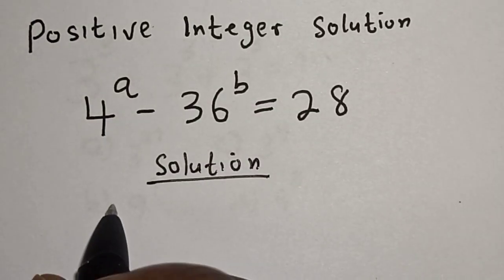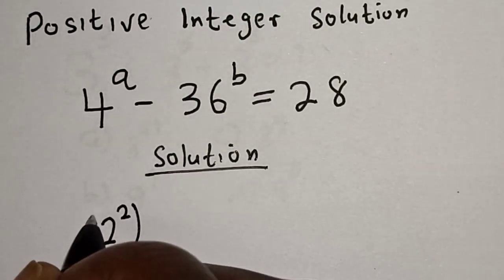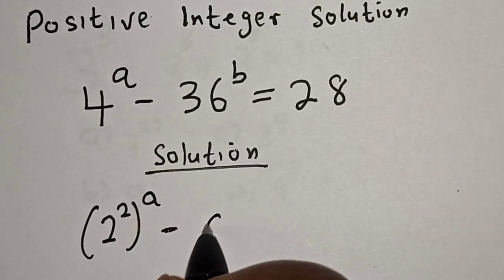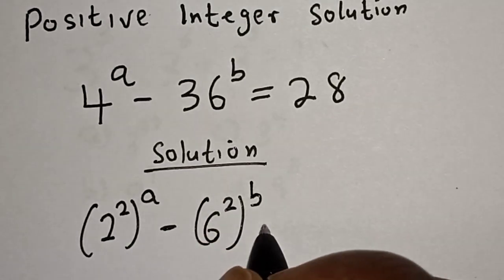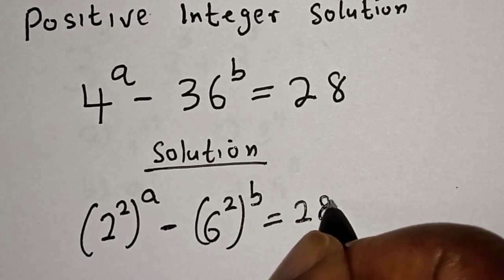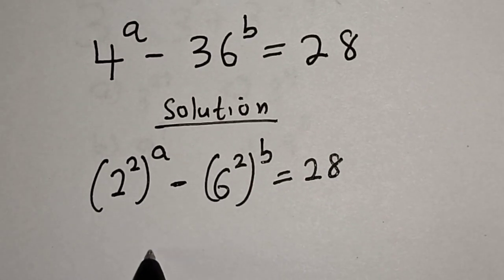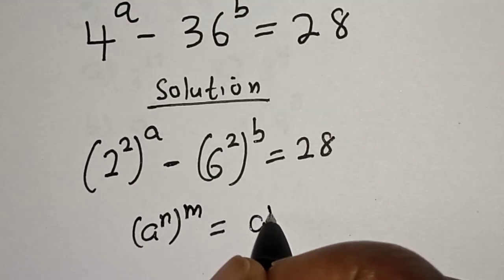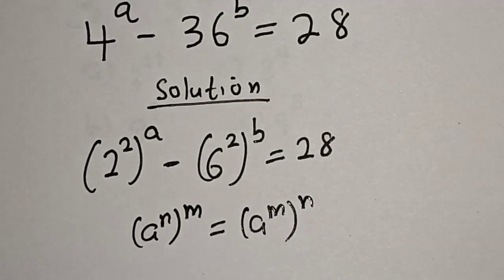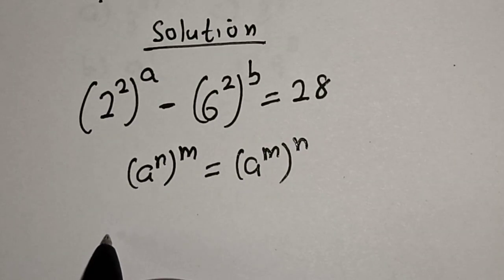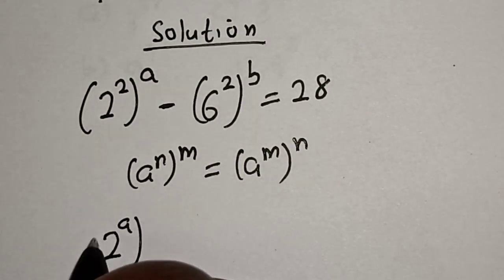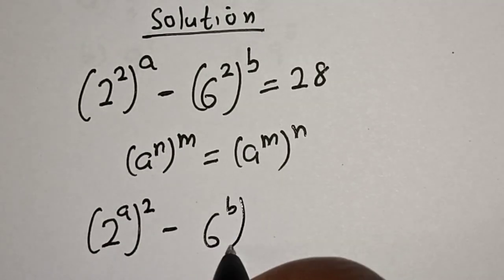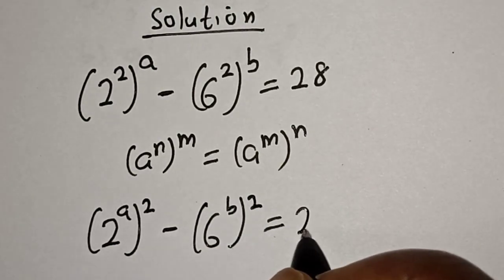4 to the power of a can be written as 2 squared, all raised to the power a. Minus 36 to the power of b can be written as 6 squared, all raised to the power b, is equal to 28. Remember the rule that a raised to power n, to the power of m, is equal to a raised to power m times n. So this becomes 2 raised to power 2a minus 6 to the power of 2b, is equal to 28.